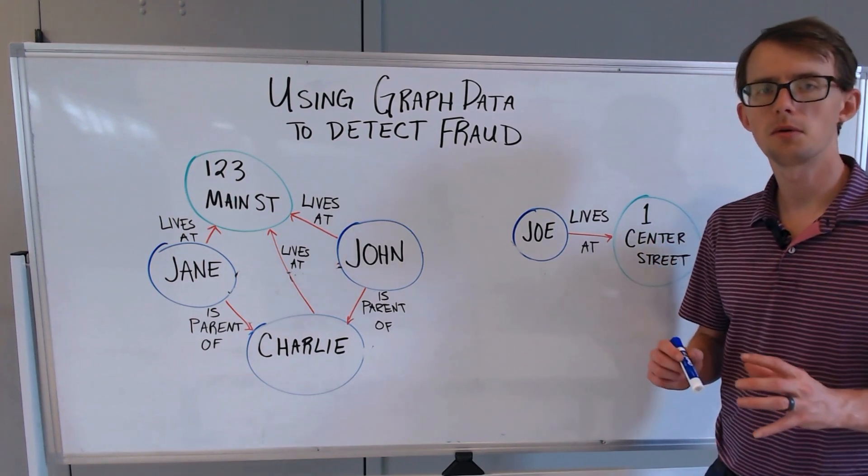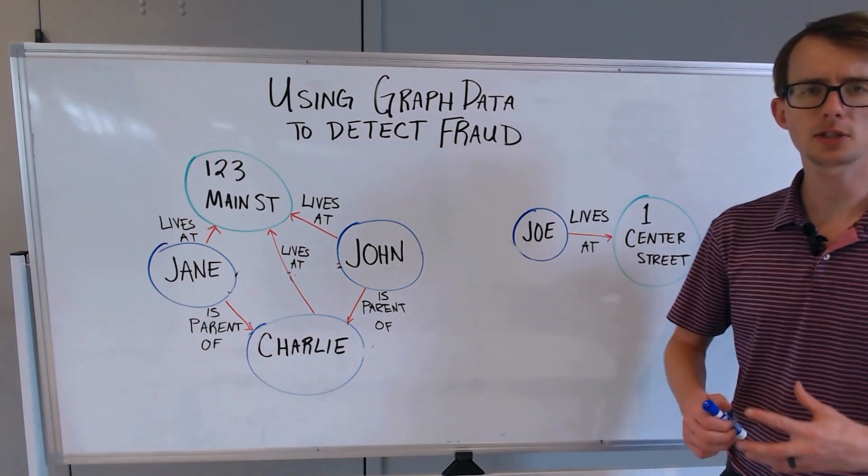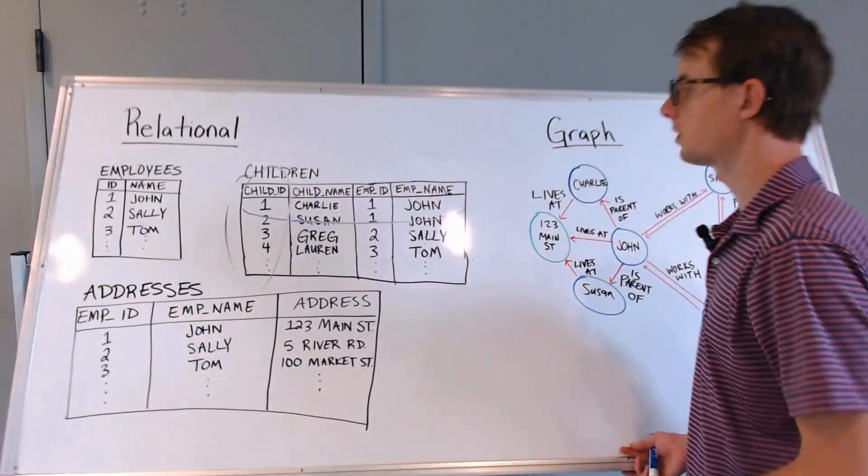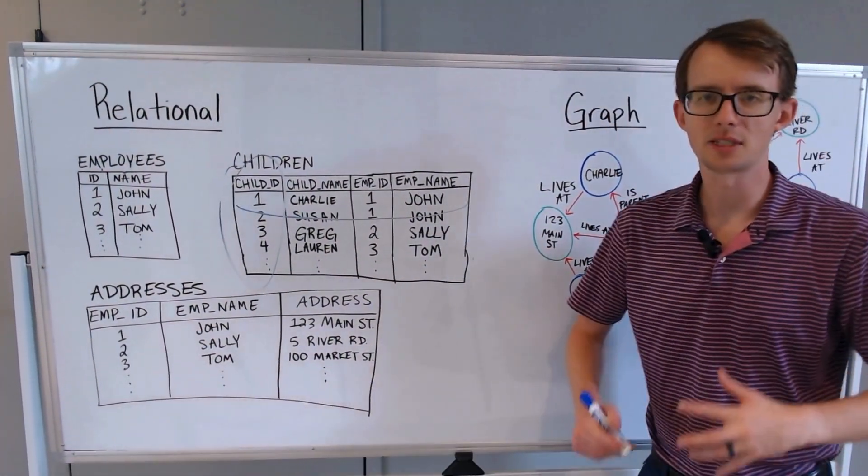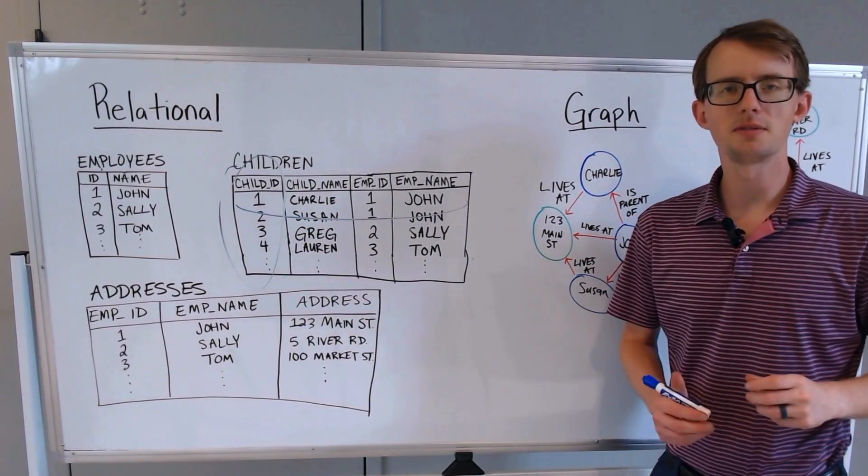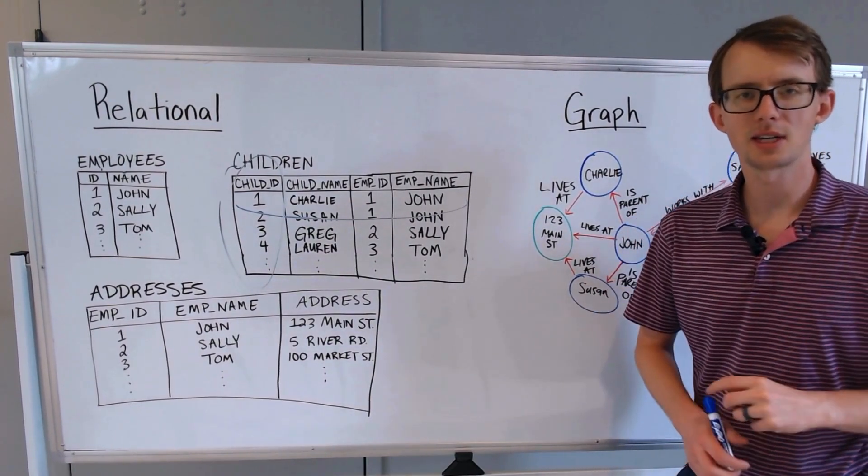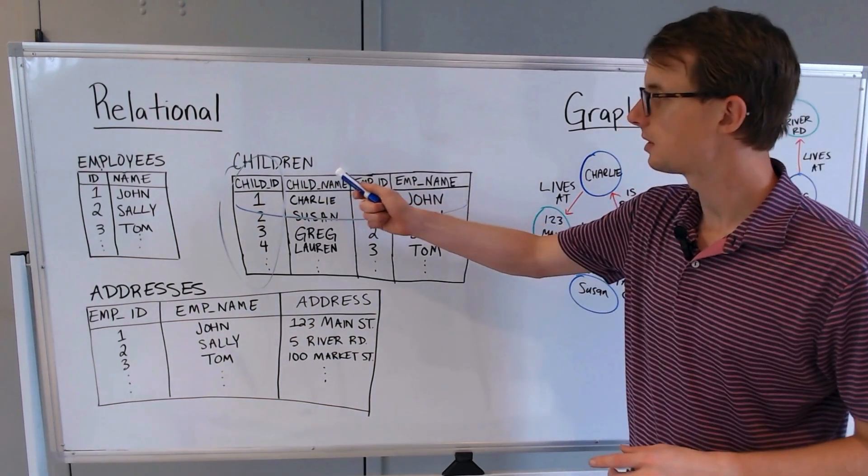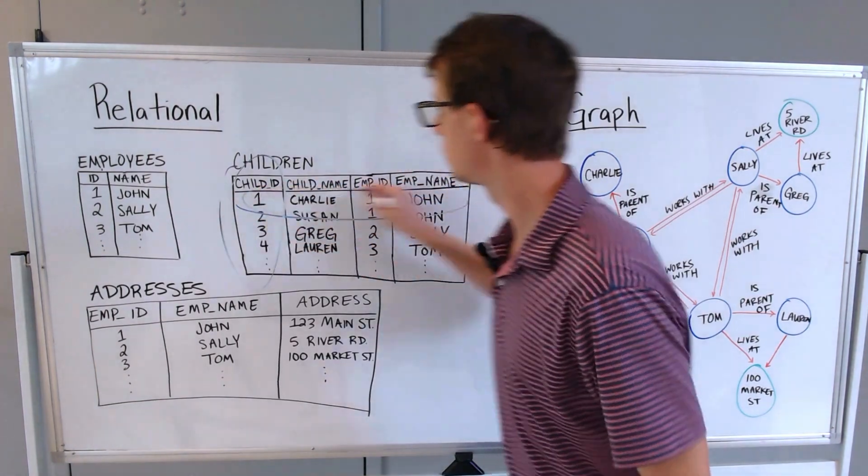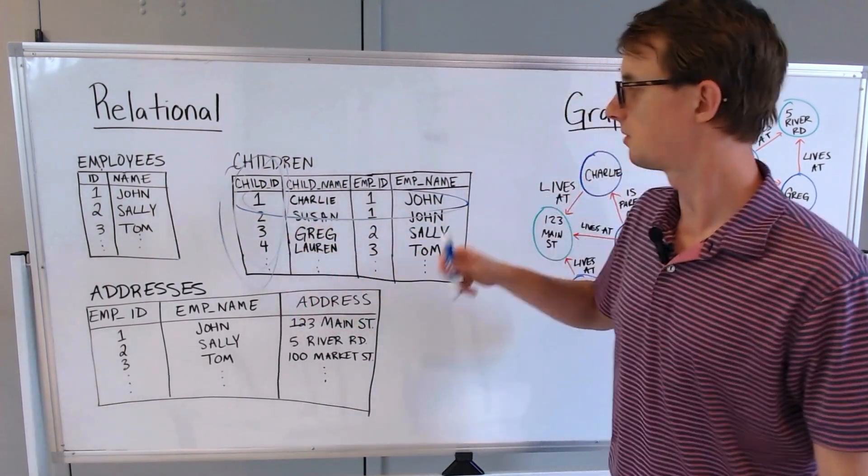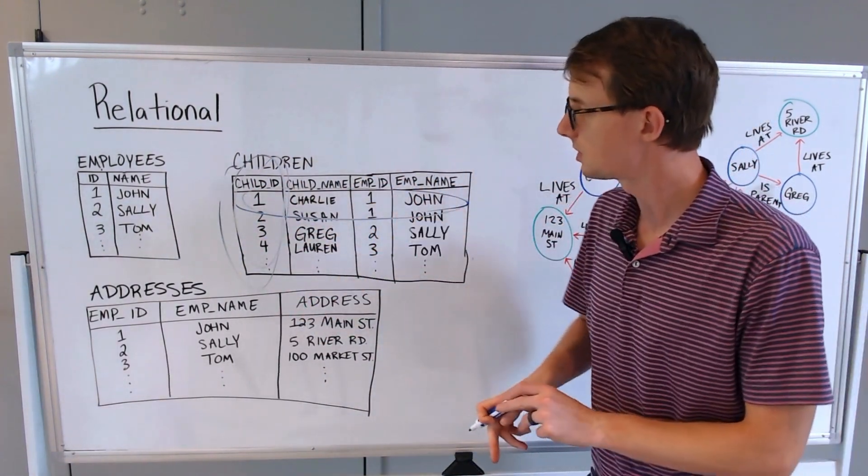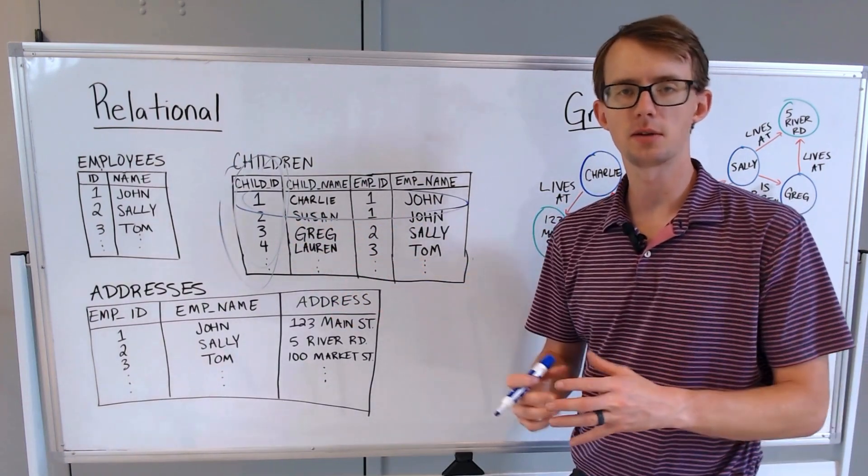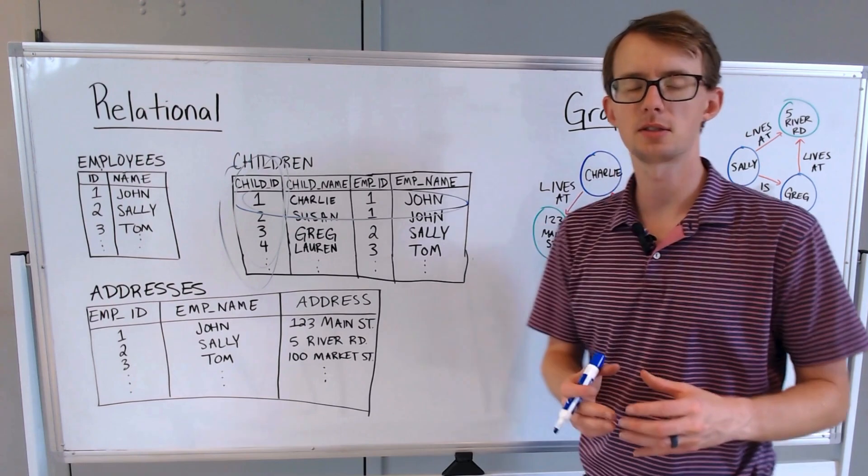Before we talk about graph data, let's first talk about the way that we've seen data before. We're going to go over relational tables. This is the way that we have seen data for a long time and we're all probably used to it. We see tables here that have different rows and different columns that identify different features.